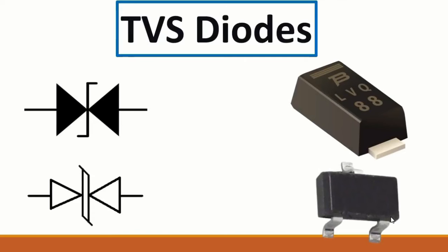The next component is the TVS diode - another type of diode. It can be a two-terminal or three-terminal diode, with its own symbol - it could be this symbol or this symbol.